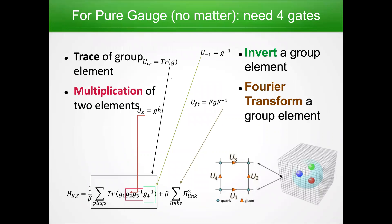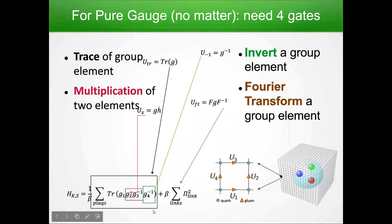Now that we have a way to map these groups to qudits, we need to figure out how to implement the required gates for a pure gauge theory. Setting aside fermions for a moment — just gluons or photons — we need an operator that gives us the exponential of the trace of the group element, we need to multiply two group elements together, we need to invert group elements (these all enter the magnetic field term in the Kogut-Susskind Hamiltonian), and we need to do a full Fourier transform of a group element, corresponding to electric field operations.